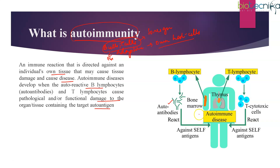These autoantibodies bind to certain proteins present on the host — these are now self-antigens, since they are present in the host itself. Similarly, T lymphocytes are majorly of two types: T helper and cytotoxic T cells. These cytotoxic T cells normally attack virus-infected host cells, but in autoimmunity they can attack normal host cells, identifying them as foreign and reacting with self-antigens or self-cells.